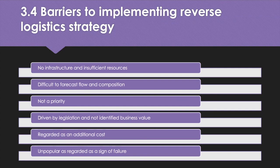Further barriers include reverse logistics being driven by legislation rather than identified business value — if business value is not identified, there will be no genuine commitment within the organisation. Municipal, local, state and federal restrictions can serve as barriers to implementation. The economic value added by contracting a third-party logistics provider needs to be carefully considered, as it may be regarded as an additional day-to-day operational cost whose value to the business is not recognised. There is also a perception that if an organisation takes back products from the market instead of selling them, it is a sign of failure.